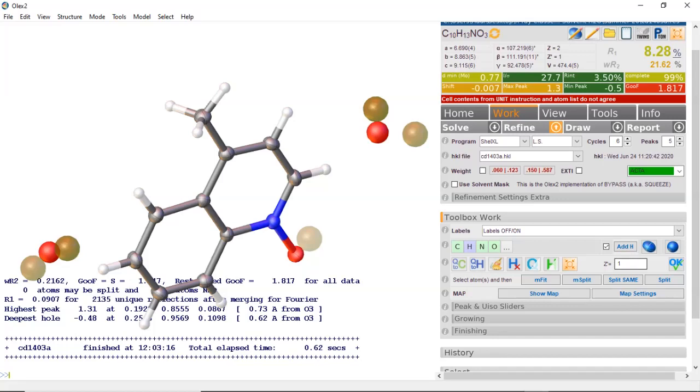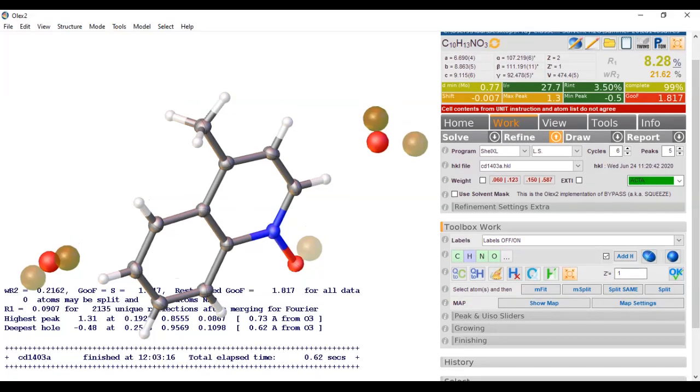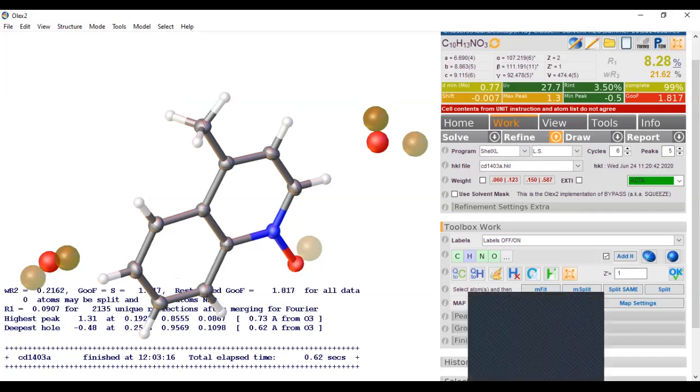Back in the old day they used to squeeze out the electron density and then they would update the HKL file accordingly by removing some reflection information. On that note I'll stop here - just wanted to show you how to use the solvent mask.